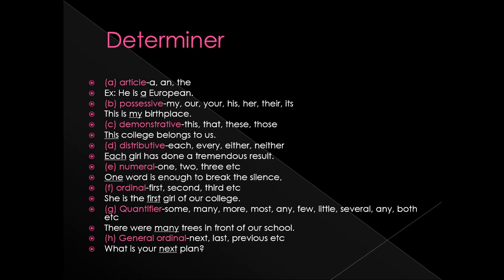Sixth is ordinal — first, second, third, fourth, etc. For example: 'She is the first girl of her college.' Here 'first' modifies 'girl.' Seventh is quantifier — some, many, more, most, any, few, little, several, both, etc. For example: 'There were many trees in front of our school.' Here 'many' qualifies 'trees.' Eighth is general ordinal — next, last, previous, etc. For example: 'What is your next plan?' Here 'next' modifies 'plan.'